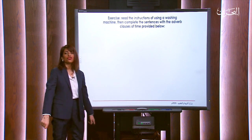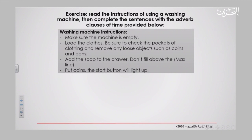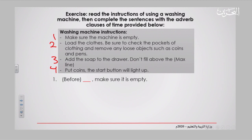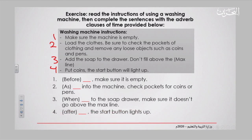Now let me give you an exercise to check your understanding. You will read the instructions for using a washing machine and complete the sentences with the adverb clauses of time provided. The instructions are: 1) Make sure the machine is empty. 2) Load the clothes — check pockets and remove loose objects like coins and pens. 3) Add soap to the drawer — don't fill above the max line. 4) Put coins — the start button will light up. Use 'before', 'as', 'when', or 'after' to fill in the gaps.